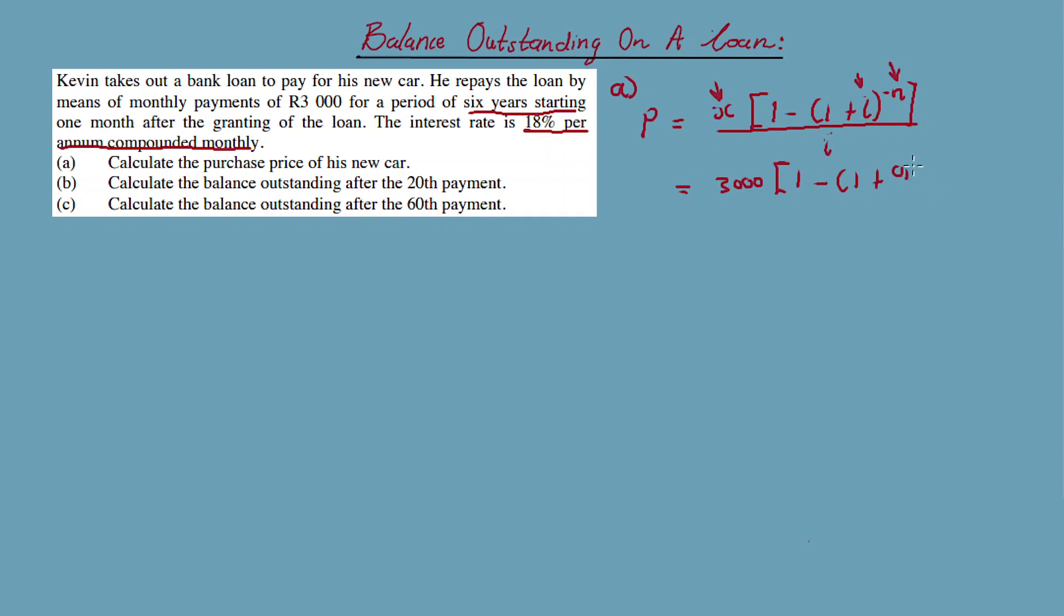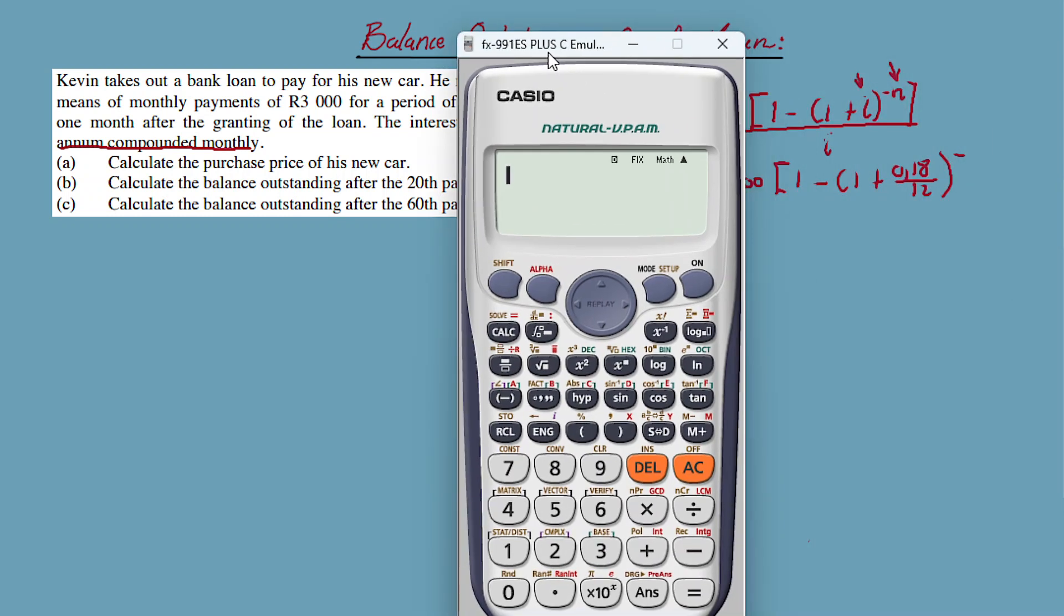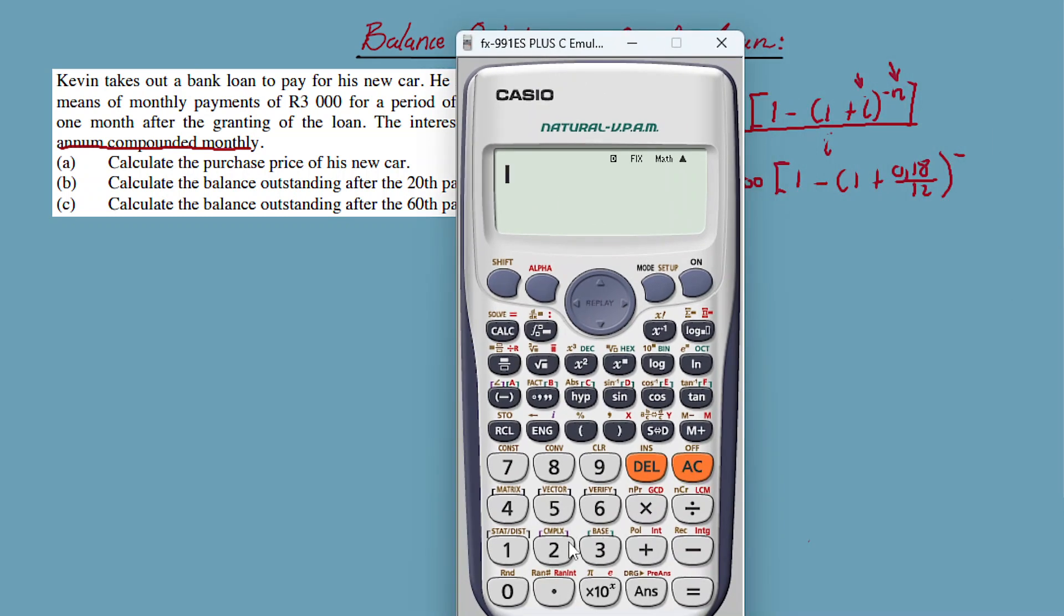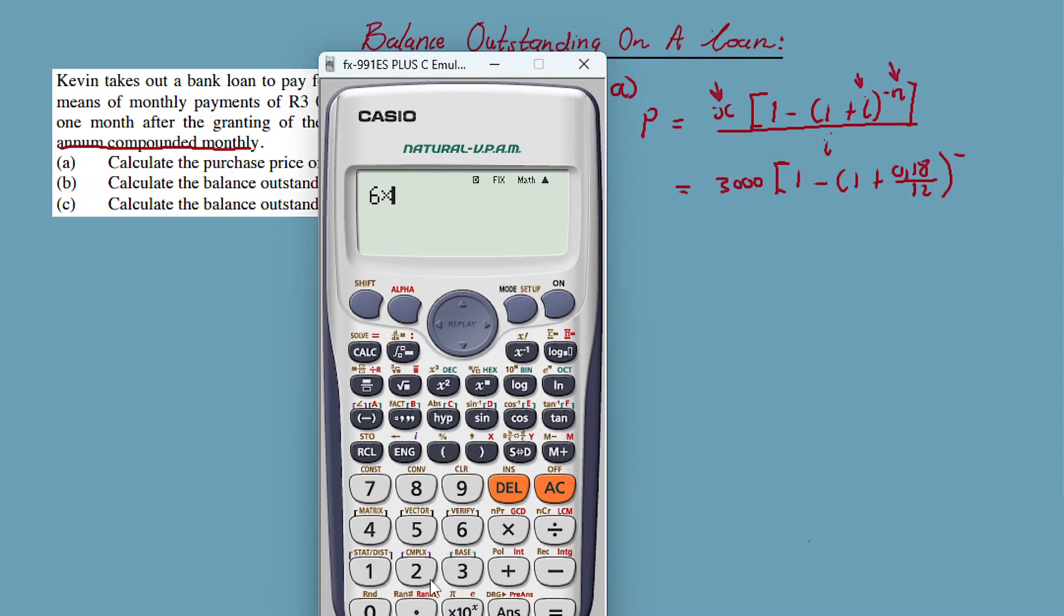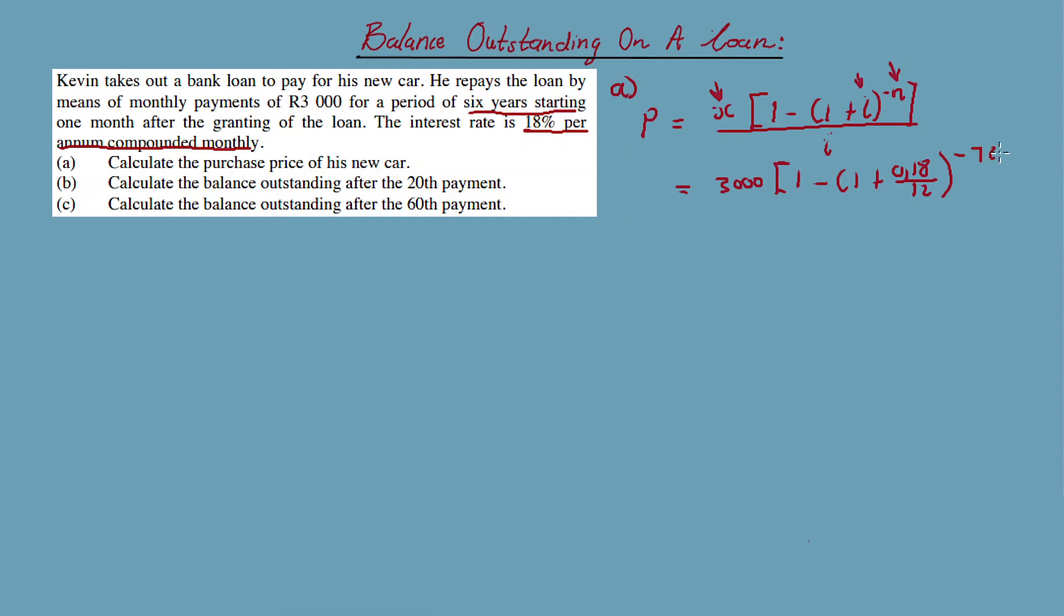Open bracket, 1 minus 1 plus, what's the value for i? It's 18%, so it's 0.18 divided by 12, since it's monthly compounded. For a period of six years, six times 12 is equal to 72. So it means that N is 72.